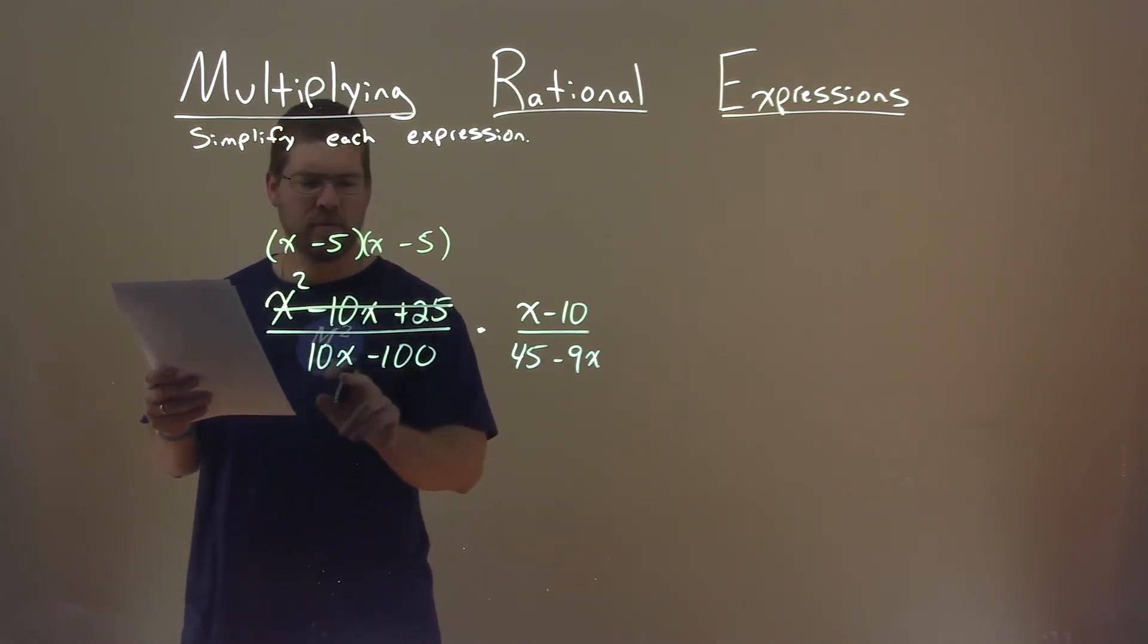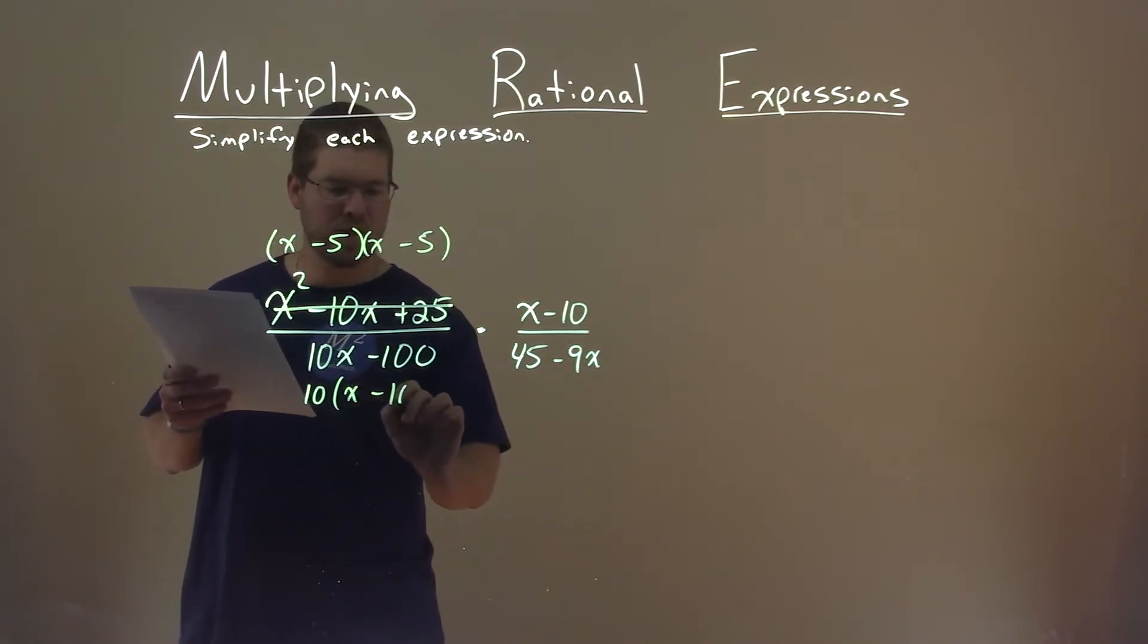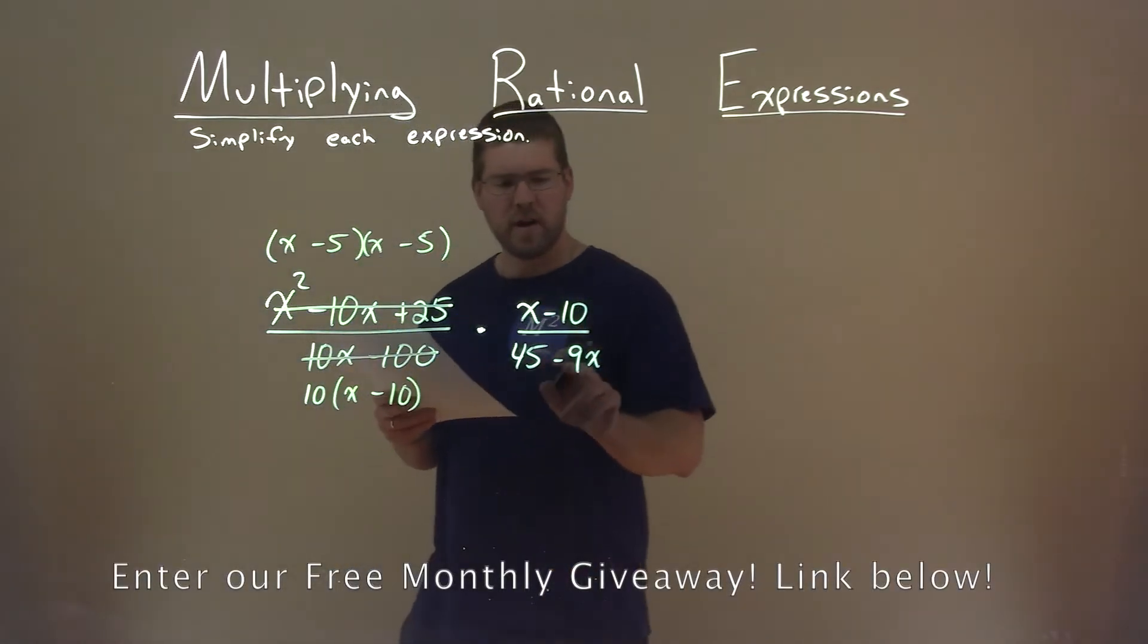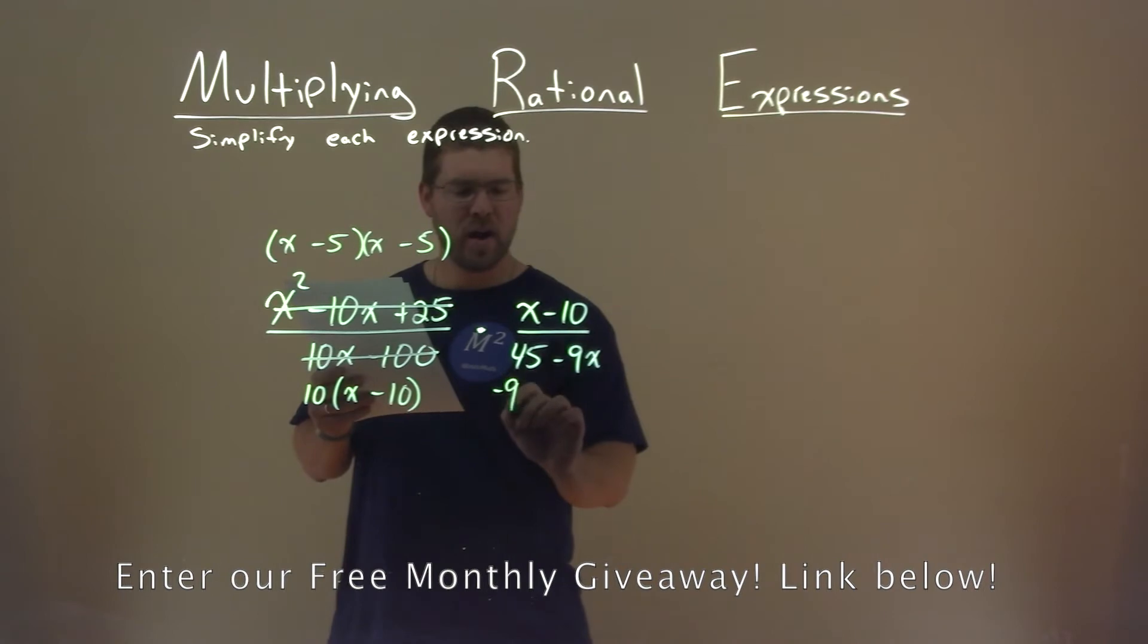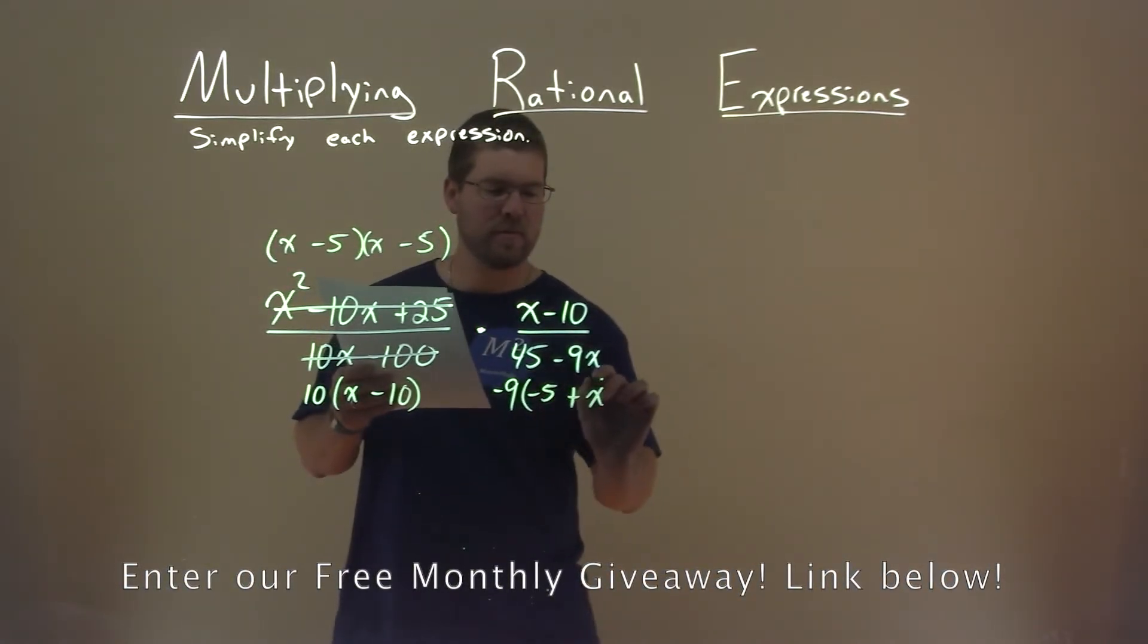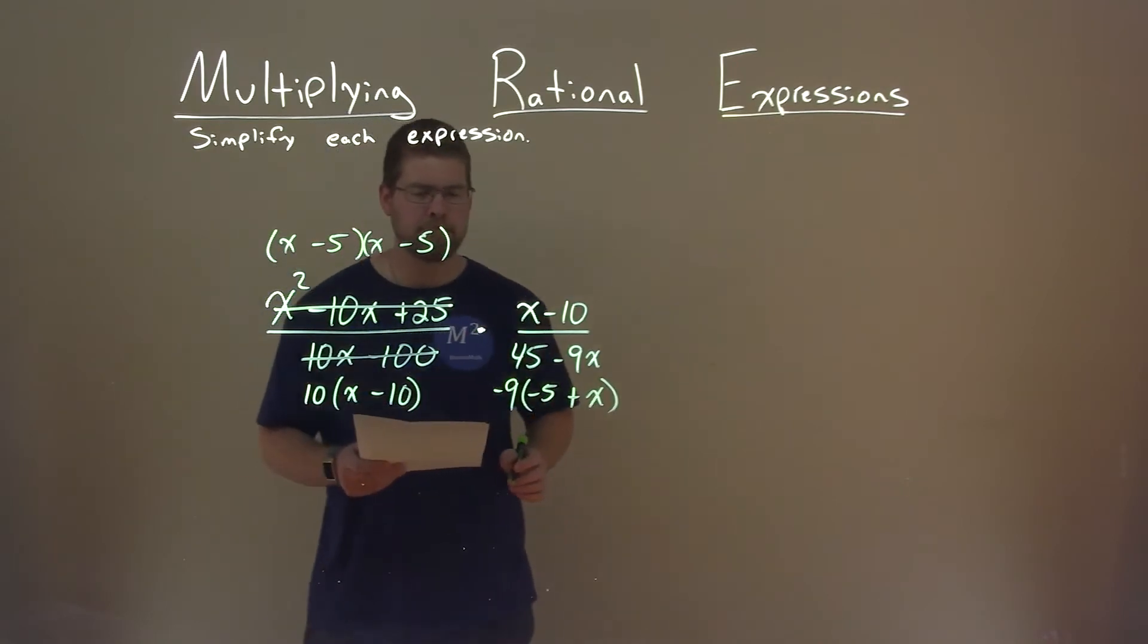Same thing here. I can pull out a 10 from both parts, and I'm left with x minus 10 here, so replace that. Now, 45 minus 9x. If I pull out a negative 9 from both parts, I'm left with negative 5 plus x. All right.